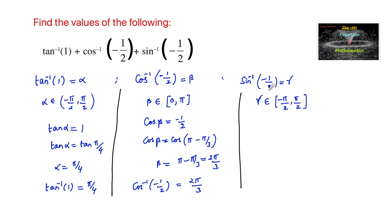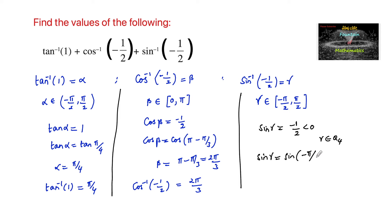For sin inverse of minus 1 by 2, we write sin gamma equals minus 1 by 2, which is negative, so it belongs to the fourth quadrant because the principal range is minus pi by 2 to plus pi by 2, covering the first and fourth quadrants. Since sin 30 degrees is 1 by 2, sin gamma equals sin of minus pi by 6, so gamma equals minus pi by 6. Therefore sin inverse of minus 1 by 2 equals minus pi by 6.